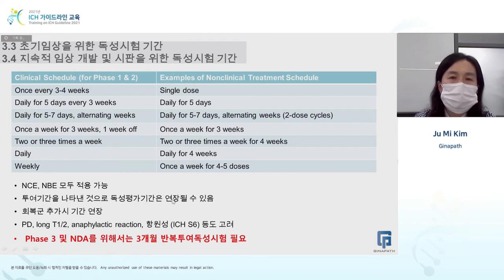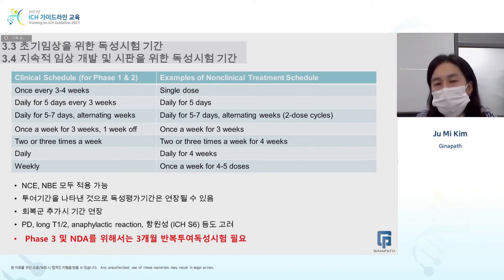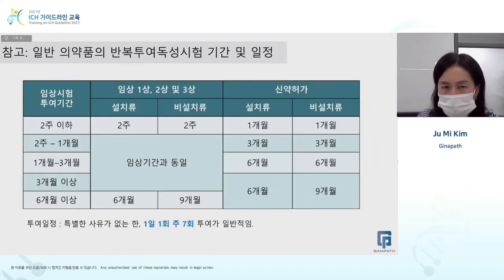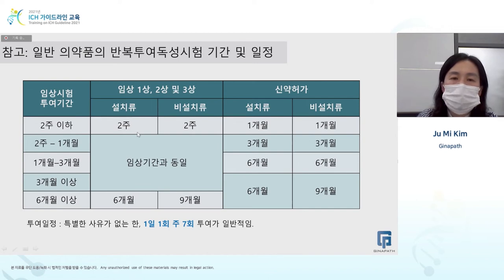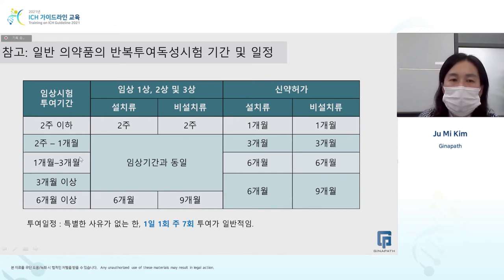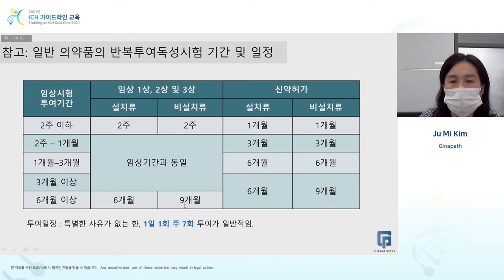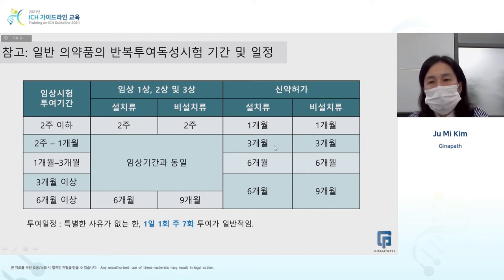A key difference between ordinary drugs and anti-cancer drugs is the non-clinical trial duration. For clinical use of two weeks or less, non-clinical studies require two weeks for both rodents and non-rodents. For clinical use of more than six months, rodents require six months and non-rodents nine months. For clinical use from two weeks to less than six months, the non-clinical duration must equal what is applied in the clinical trial.